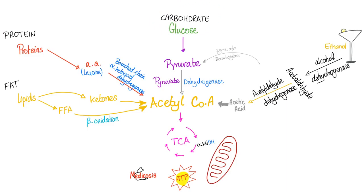Whether you eat carbohydrates, proteins, or fat, the end result is Acetyl-CoA, which goes into the Krebs cycle in the mitochondria to give you energy called ATP. From glucose to pyruvate is called glycolysis. If you have enough oxygen, pyruvate will become Acetyl-CoA and give you tons of energy. But what if you do not have enough oxygen? That's anaerobic glycolysis — pyruvate will become lactate or lactic acid.